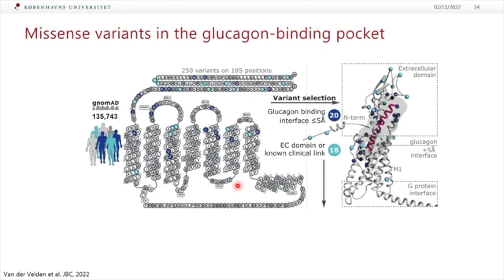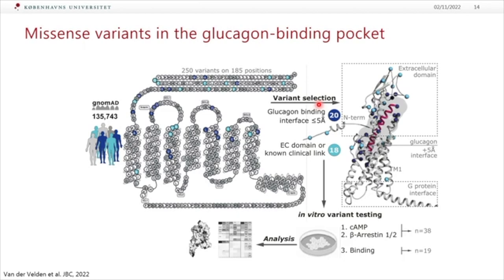Let's focus on the glucagon receptor and the variants in that receptor. The first study we did was to look into the GNOMAD database, where we found 250 variants in 185 positions. A master student selected 20 variants potentially important for glucagon binding, and 18 variants that had been described before or were known as being important for signaling. We characterized them in cyclic AMP accumulation, arrestin recruitment, and in some cases binding, and then looked into the UK Biobank and GNOMAD for any phenotypic implications.